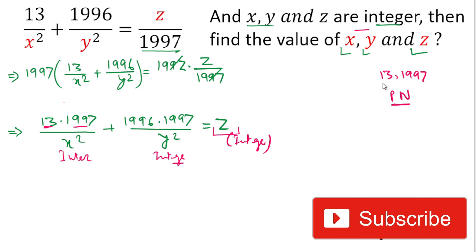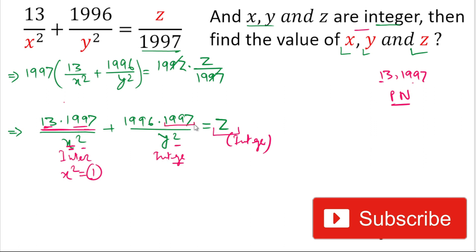These numbers will only be divisible by 1 and themselves. For making the whole term an integer, the value of x² should be 1 only, because no number other than 1 is exactly divisible by these prime numbers. For the second term divided by y², again 1997 is a prime number.